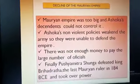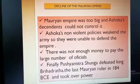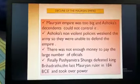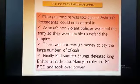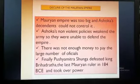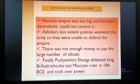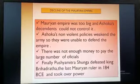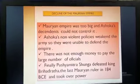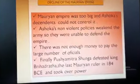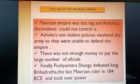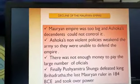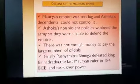Next we come to the decline of the Mauryan Empire. Decline means the fall — how it came to an end. The Mauryan Empire was too vast, too big, and Ashoka's descendants could not control it. Ashoka's descendants means the generations which came after Ashoka; they were not very powerful or strong. Moreover, Ashoka's non-violent policies had weakened the army, which was unable to defend the empire.